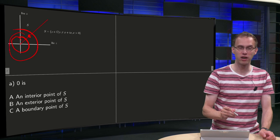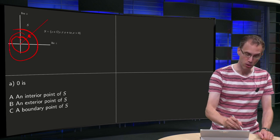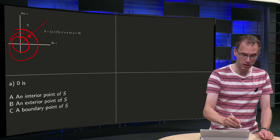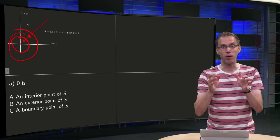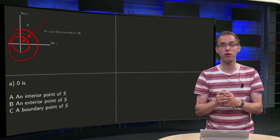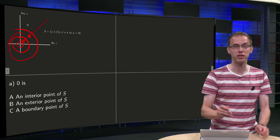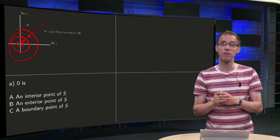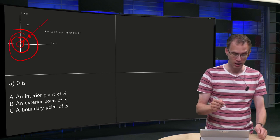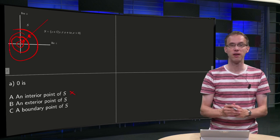We make a smaller disk around the origin — does this disk contain only points of S? No, the previous point is now outside, but this one over here is still in the complement of S, so also this disk does not contain only points of S. We can continue to draw a smaller disk, which will always have points of the line inside it, which means that the origin is not an interior point of S.